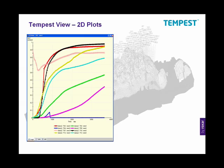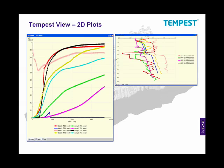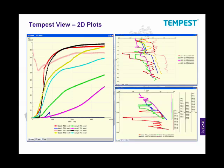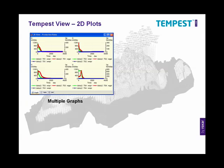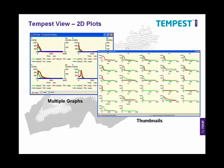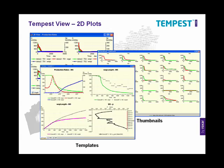Tempest View allows us to produce plots that can be displayed against either time, measured depth or true vertical depth. It also allows for the production of multiple graphs in the same picture view to compare different wells or simulations. Thumbnail plots can also be created, providing a means for quickly seeing all well information and scanning results of multiple wells at once. Tempest View also includes a powerful 2D templating system that allows the user to set up their own library of custom plots that can be recreated at the click of a button.